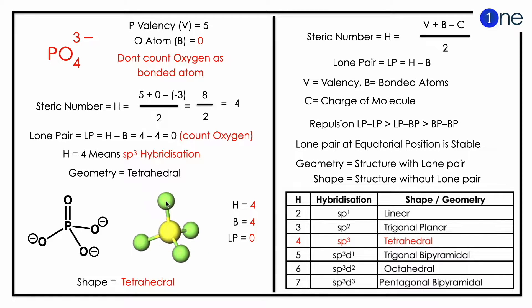To find the hybridization, you should know the steric number, which is H equals B plus B minus C whole divided by 2. So the phosphorus valency, B, is 5. Oxygen, we should not count, so it's 0. If you substitute in the formula, 5 plus 0, you have trianion, so minus of minus 3, whole divided by 2.